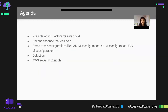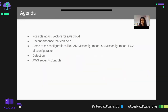The agenda for today's talk covers: what are the possible attack vectors for the AWS cloud, reconnaissance techniques to identify those attack vectors, some misconfigurations like IAM misconfiguration, S3 misconfiguration, and EC2 misconfiguration. Then detection methods to identify those misconfigurations and the relevant security controls.